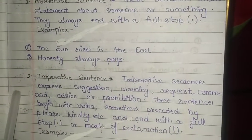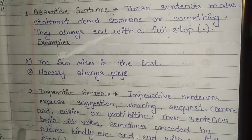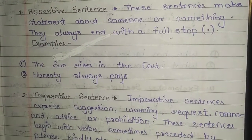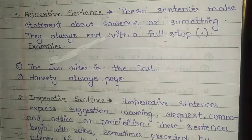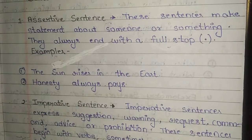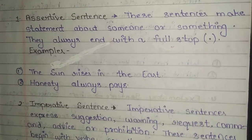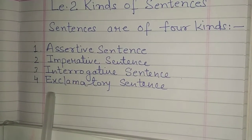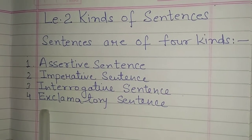As I have told you, first write these 2 kinds with their definitions. After that, show me your copy tomorrow in the first period between 8:30 to 9:00. Tomorrow I will explain the next 2 kinds — interrogative sentence and exclamatory sentence — with examples, and then you will write those in your copy. Thank you.